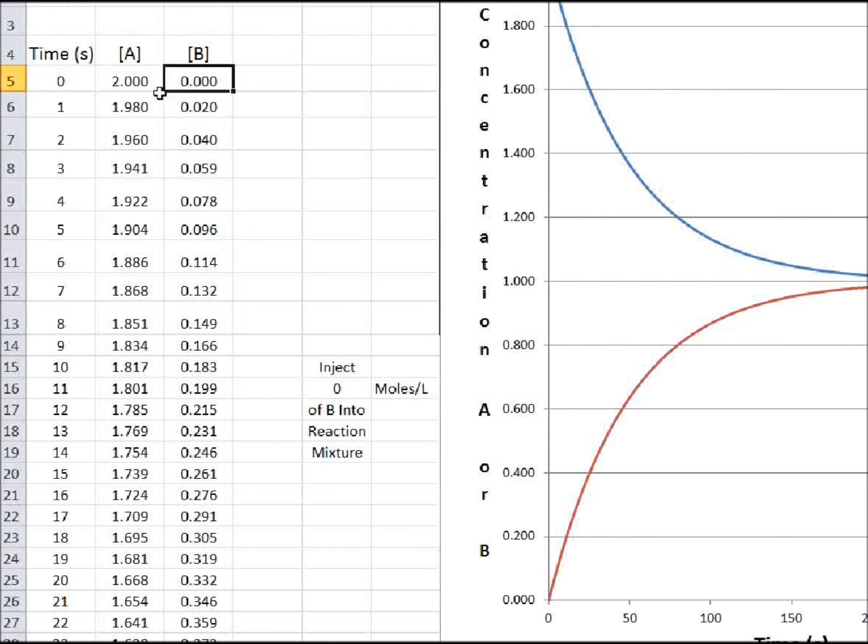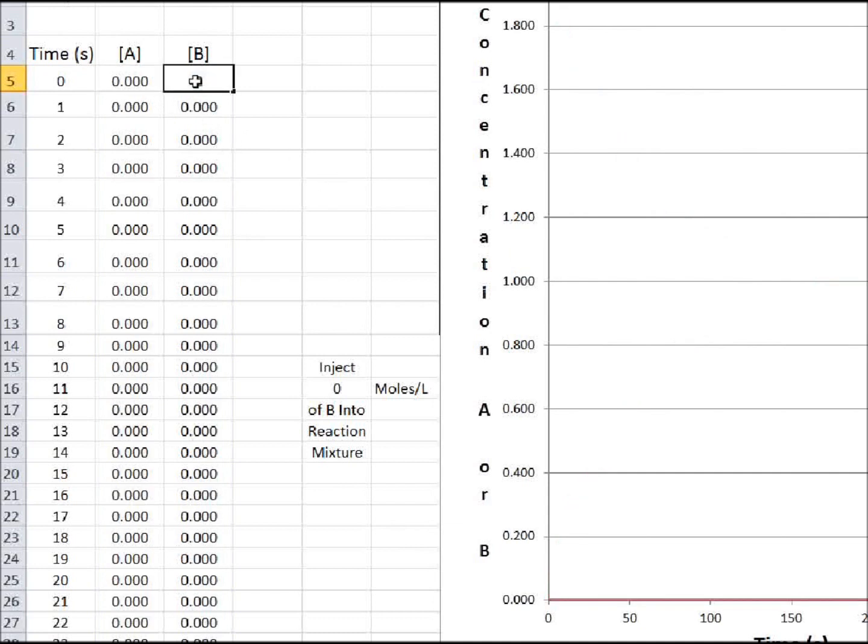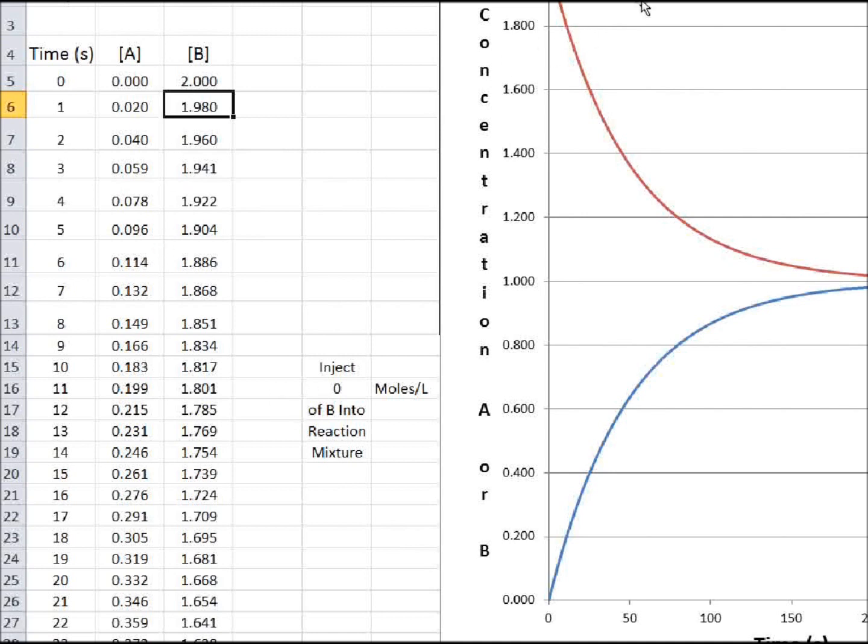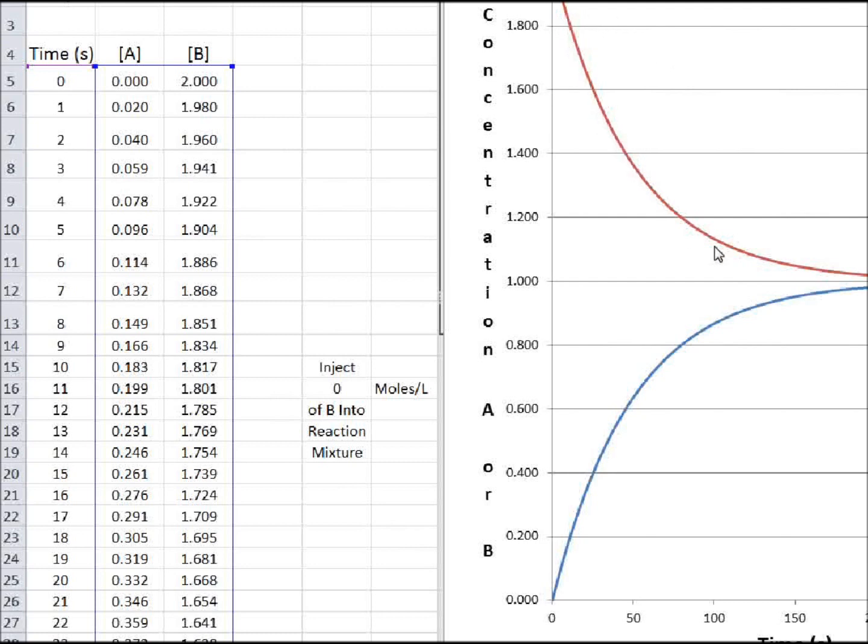Now if you start it with zero A and two molar B, you get the same thing, only now you start with B, and the B decreases from two to one molar, and the A increases from zero to one molar.